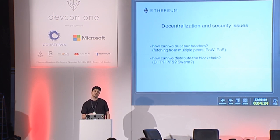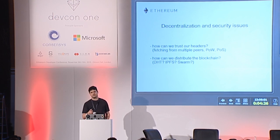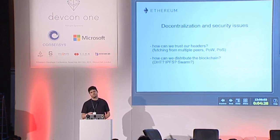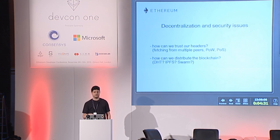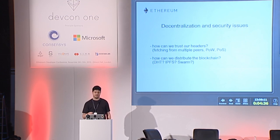We can also increase our security by fetching headers from multiple peers, preferably randomly selected peers, and only accept headers as part of the canonical chain when we have received them from the majority of our peers.